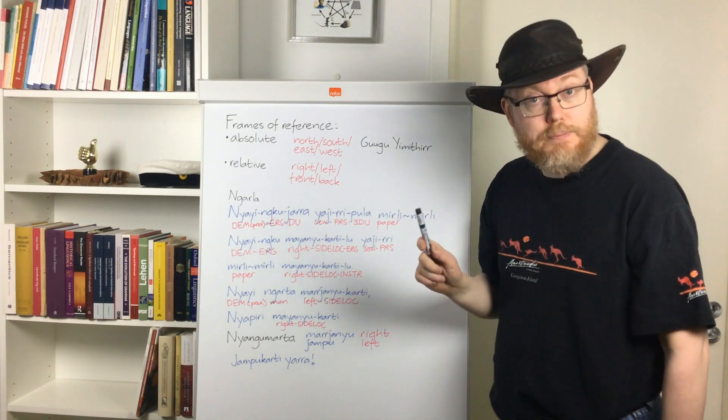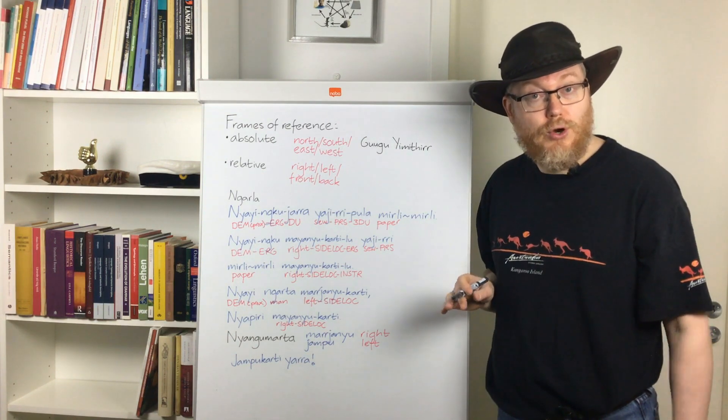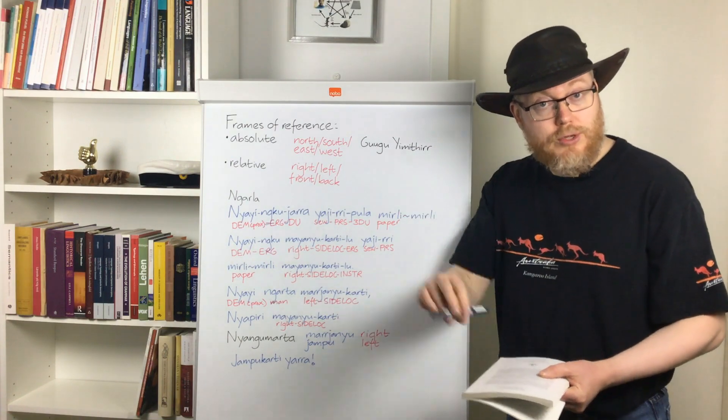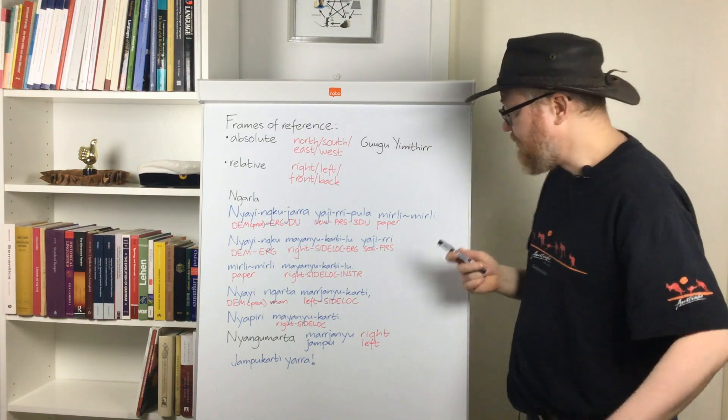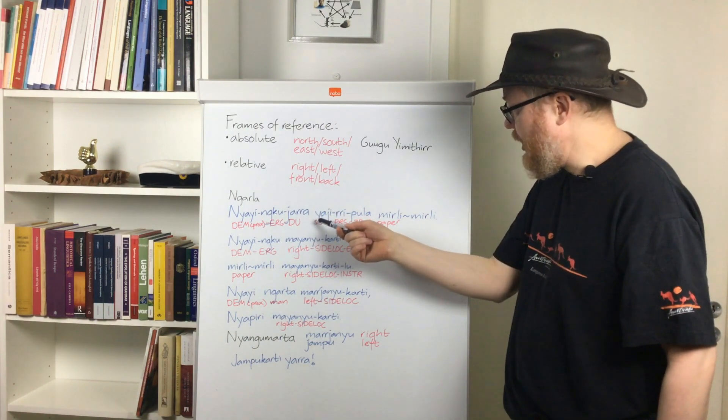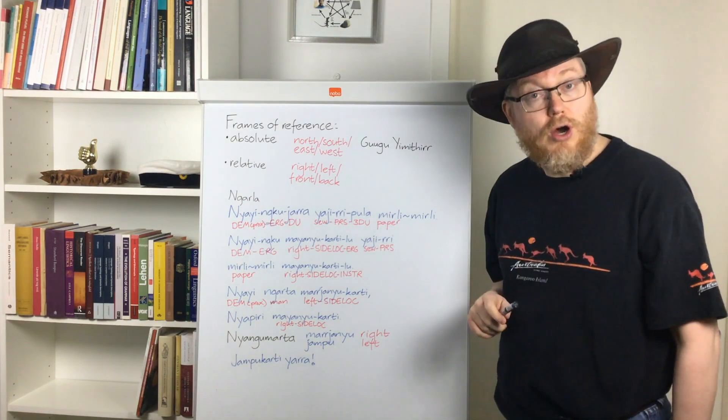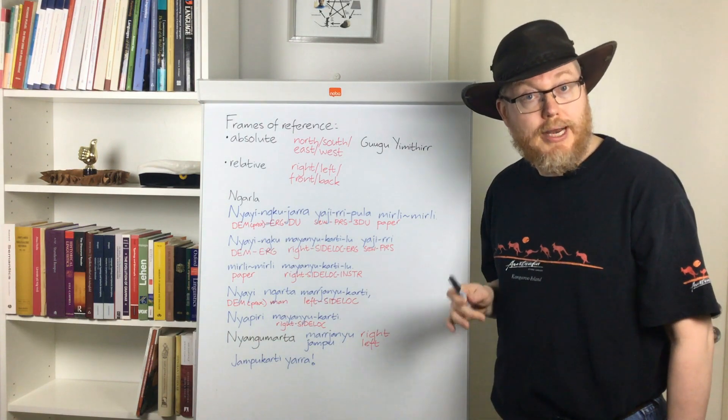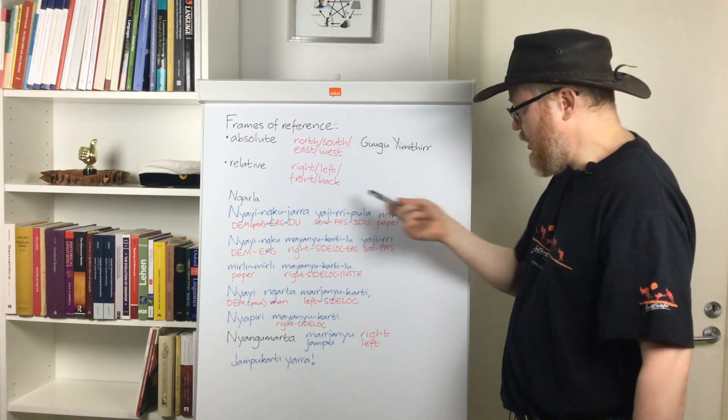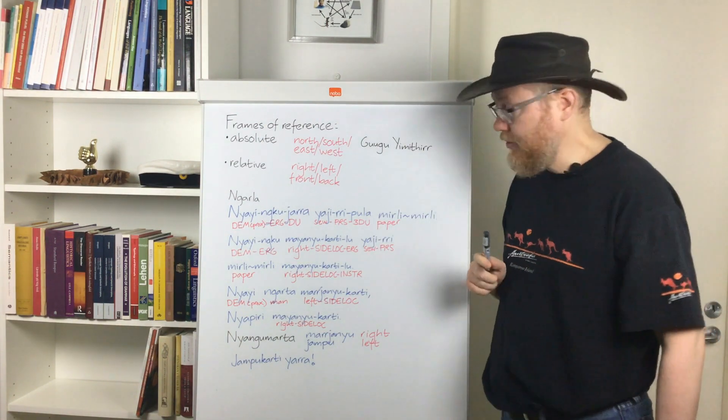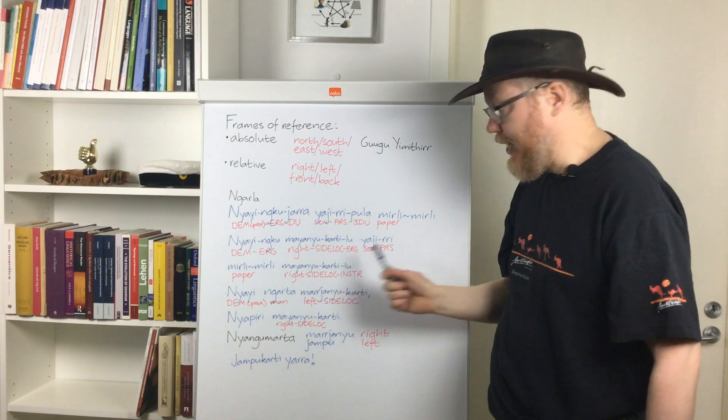And as I have explained in another video, the aborigines in this region who first saw white men writing thought it looked like they were sewing or stitching. And that is what this verb here means, yadji. So, yadjiiri meri meri, to sew on paper became lexicalized in the sense to write. So, this means these two are writing.